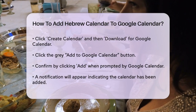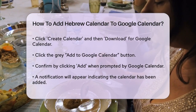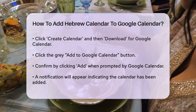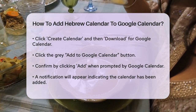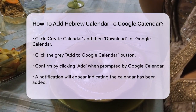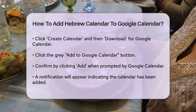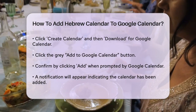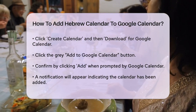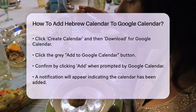Next, click on the gray Add to Google Calendar button. When Google Calendar prompts you, click Add to add the calendar from download.hebcal.com. You'll see a brief message at the bottom of the screen saying Calendar Added. After a few minutes, you'll see your new calendar in the left sidebar under Other Calendars.